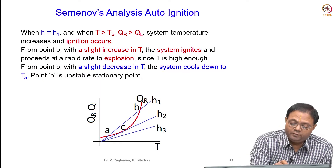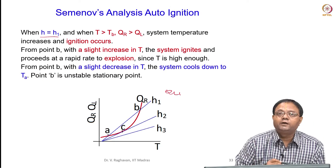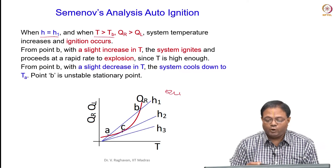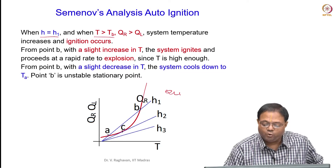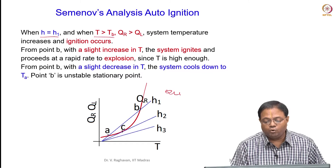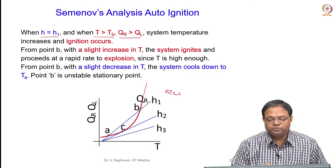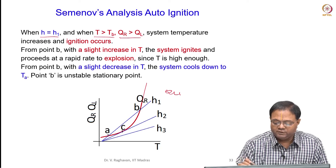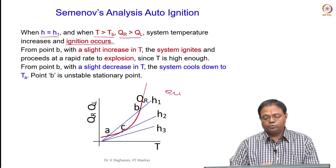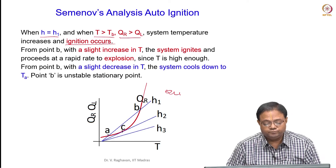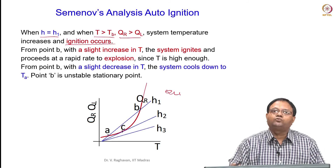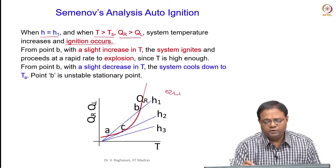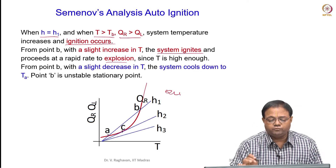Now, on the same curve with H equal to H1, consider the situation where T is greater than TB. When T is greater than TB, Qr is higher and QL1 is lower, so Qr is greater than QL. The right-hand side is positive, so dT/dt is positive — the temperature increases and ignition occurs. Ignition occurs because the temperature is also very high here, and it will go to the explosive limit.